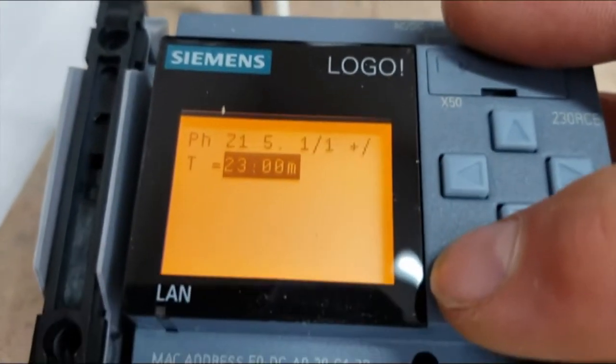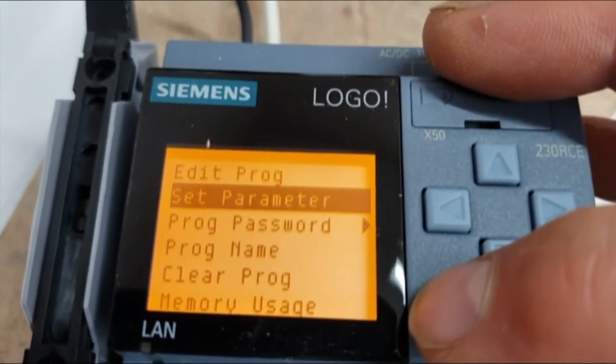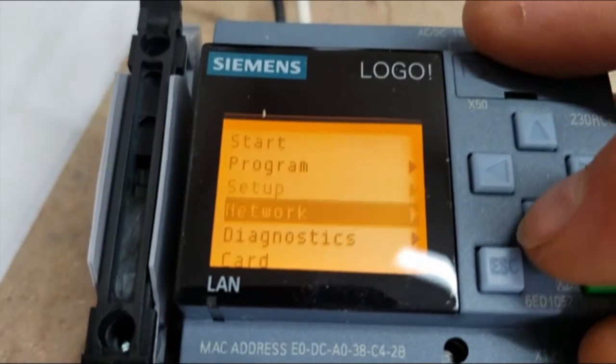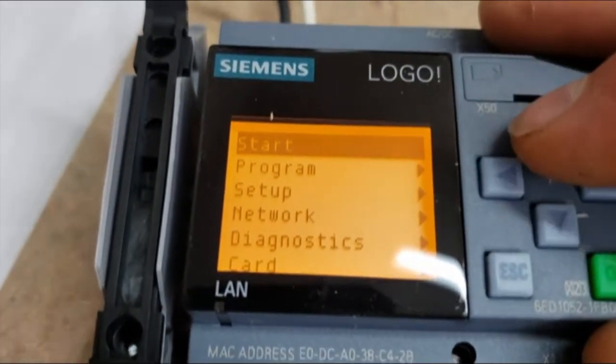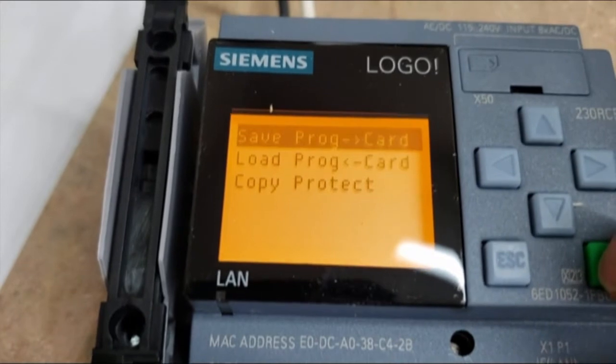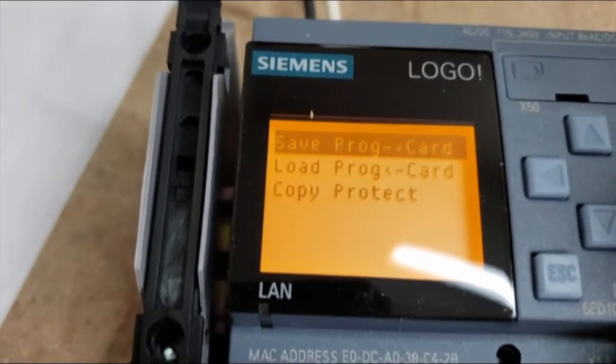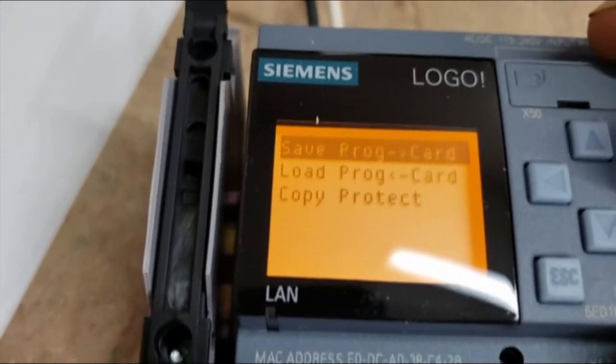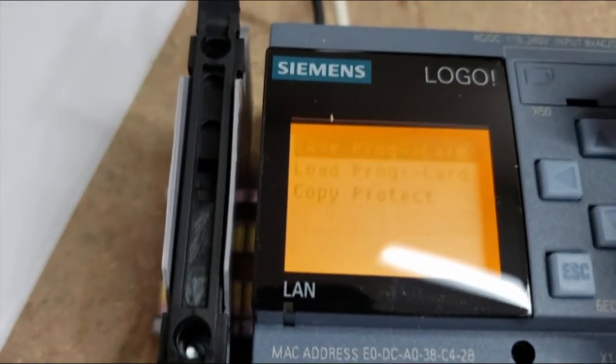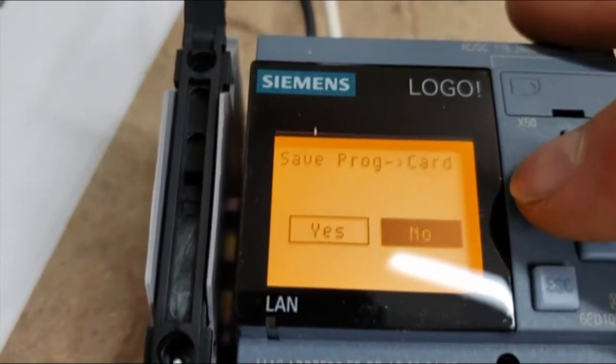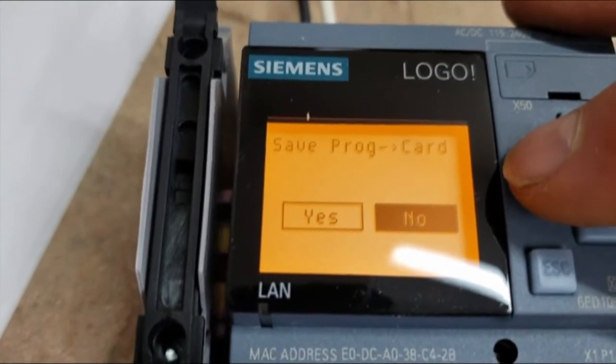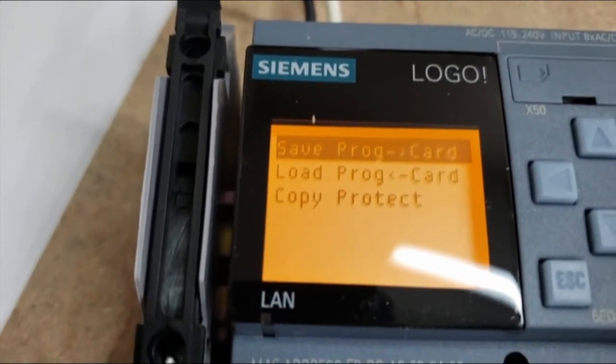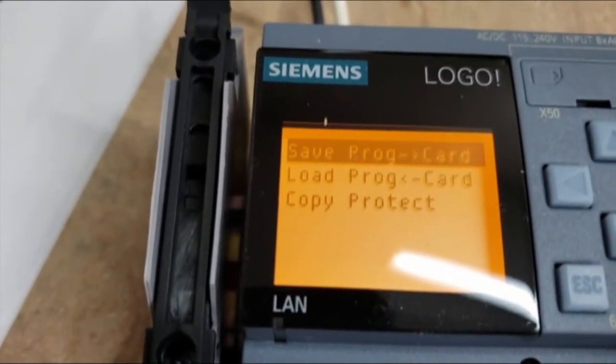So now we escape out of this because we've made our changes. We go back to the card menu that I showed you earlier. And we save the program to the card. You'll see the direction arrow between the word prog and card. That shows the direction of data flow. So we are saving the program to the card. Sometimes it does a keyboard bounce, but we have to verify by saying yes. And that little progress bar showed that we save the program to the card.